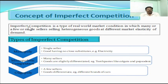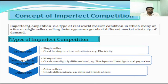If the number of sellers is one, then the market is called monopoly. If the number of sellers are two, then it is called duopoly. If it is more than two but not many, it is called oligopoly. And if the number of sellers are many, who are producing close substitutes of one another, then the market is called monopolistic competition.